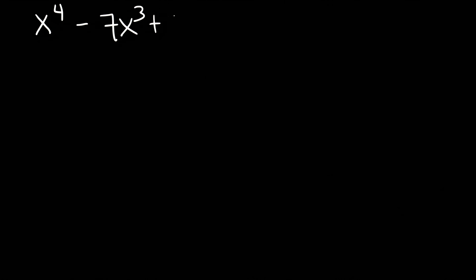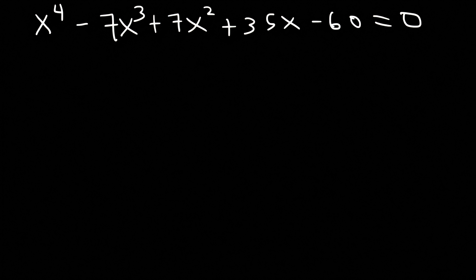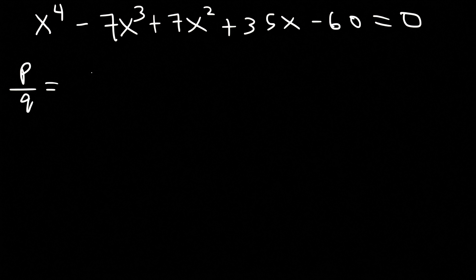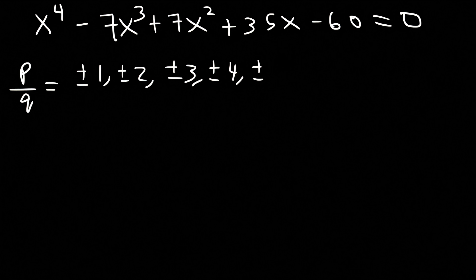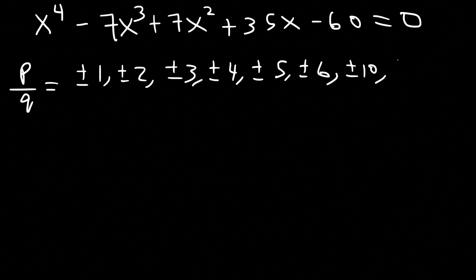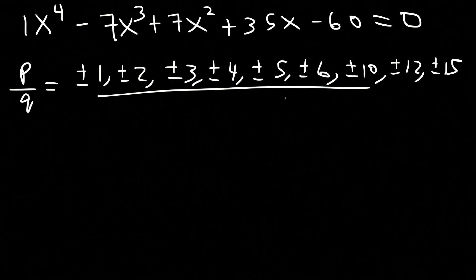Here's another problem: x to the fourth power minus 7x cubed plus 7x squared plus 35x minus 60 equals 0. Go ahead and solve this particular polynomial equation. Using the rational zero theorem, the factors of 60 are going to be 1, 2, 3, 4, 5, 6, 10, 12, 15, 20, 30, and 60. The leading coefficient is 1, so there are a lot of factors to check.